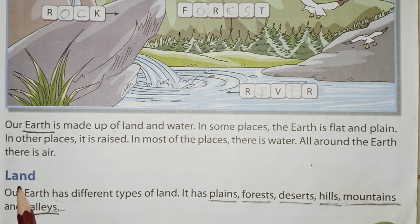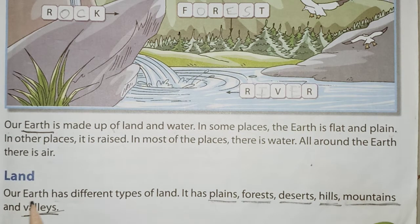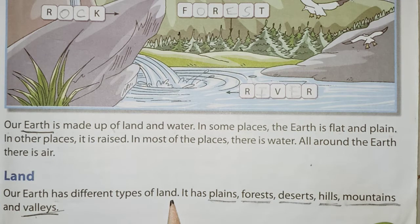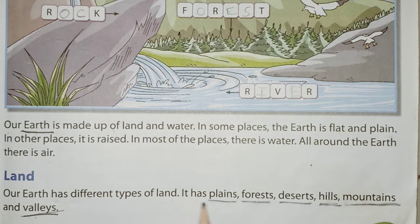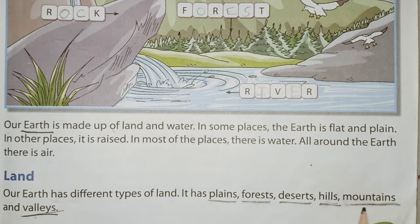Now let's study the different types of land on our Earth. Our Earth has different types of land forms. Somewhere the Earth is plain and flat, and somewhere we can see hills and mountains which is the raised land. It has plains, forests, deserts, hills, mountains and valleys.